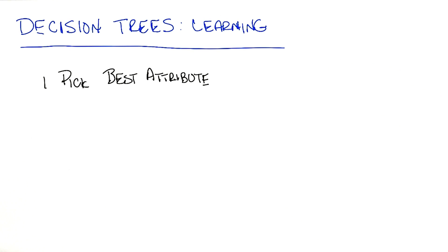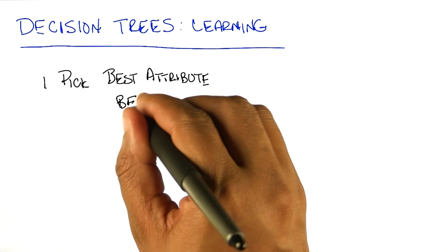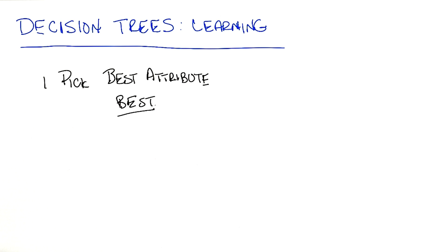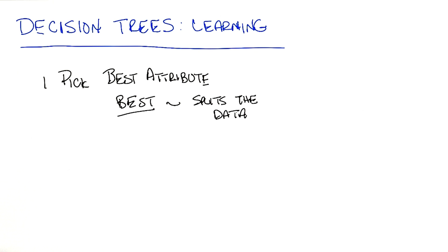All right, so the first thing you did is you picked the best attributes that you could think of, and by the way, you said something very particular here. You've actually defined what best is. You said that best is the same thing as splitting things roughly in half. So let's revisit that in a moment. Okay, so the first thing you did is you picked the best attribute.